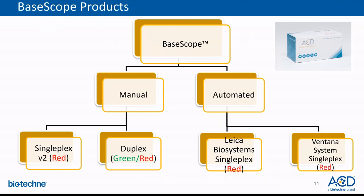The BASCOPE assay is currently available in both manual and automated workflows to fit your needs. In the manual workflow, BASCOPE can be utilized as a single-plex red assay or duplex green and red assay. In the automated workflow, BASCOPE supports single-plex red assay on either the Leica Bond RX or the Ventana Discovery Ultra. BASCOPE is a chromogenic assay; however, it can also be viewed under fluorescence microscopy. With that, I'll turn it over to Anushka to go into details of BASCOPE applications.